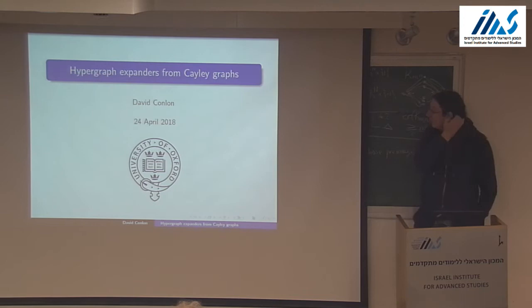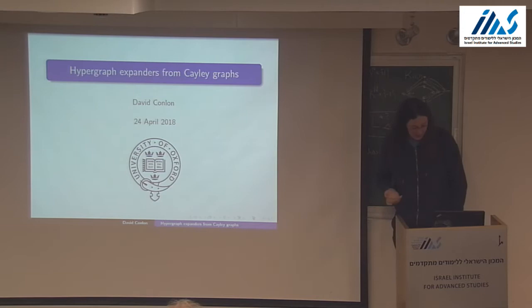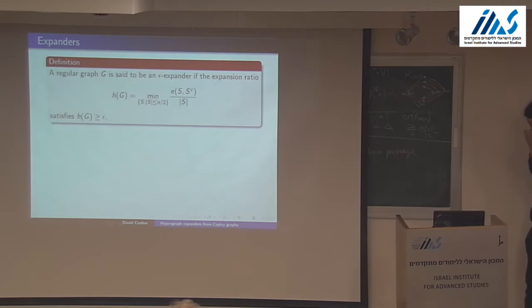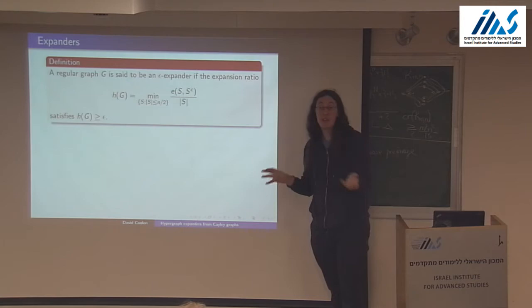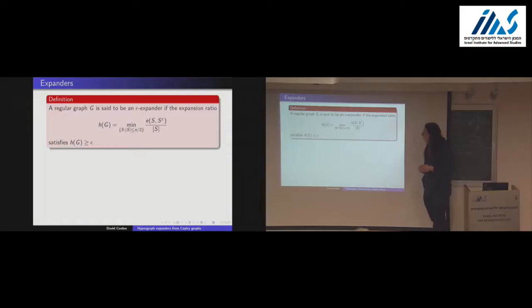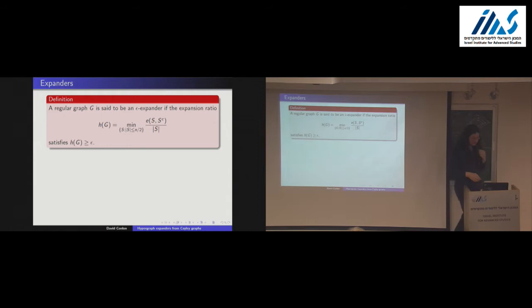I'm hoping that this will be a relatively gentle talk, but let me start out with some context that everybody already knows. We're going to be talking about expanders. An expander is just a graph where every vertex set has lots of edges coming out of it. Formally, we define an expansion ratio, which measures the number of edges coming out of each set, and then take the minimum over all sets of size less than half the graph.